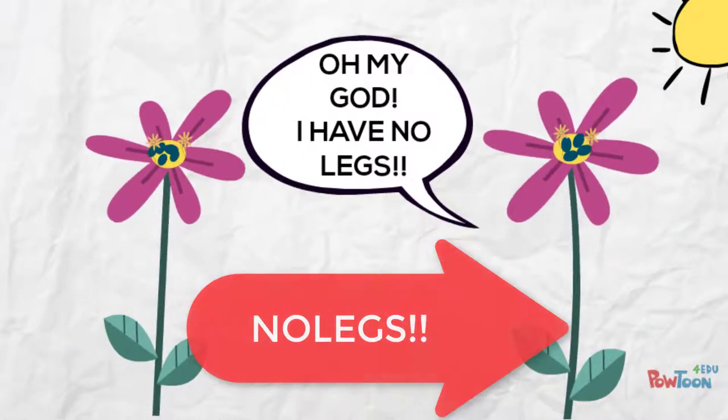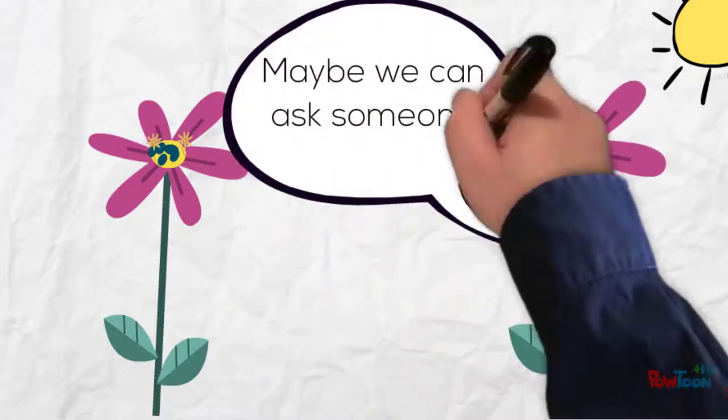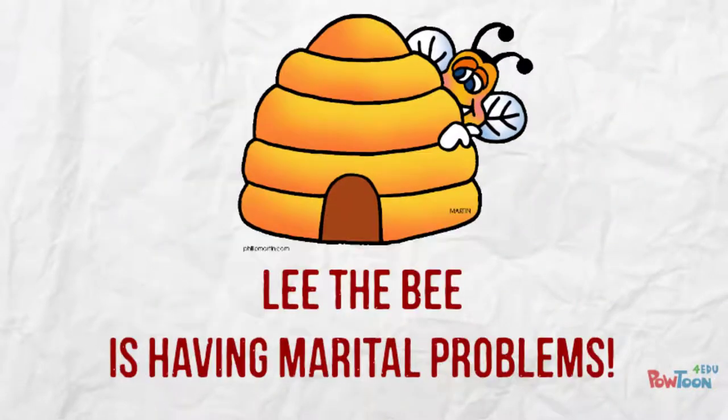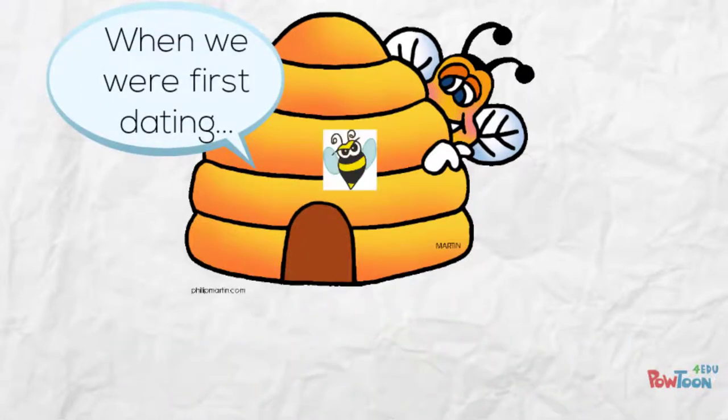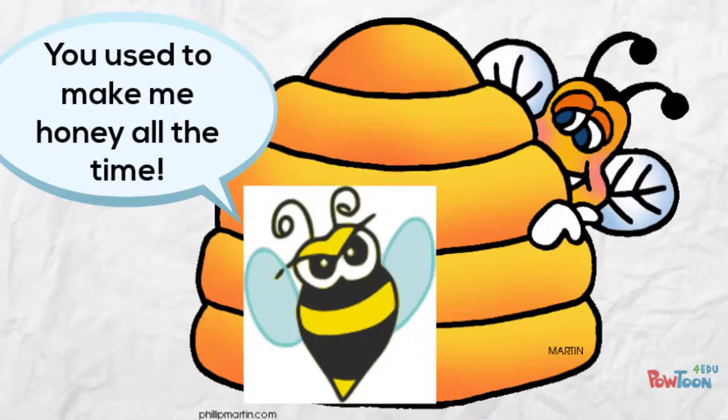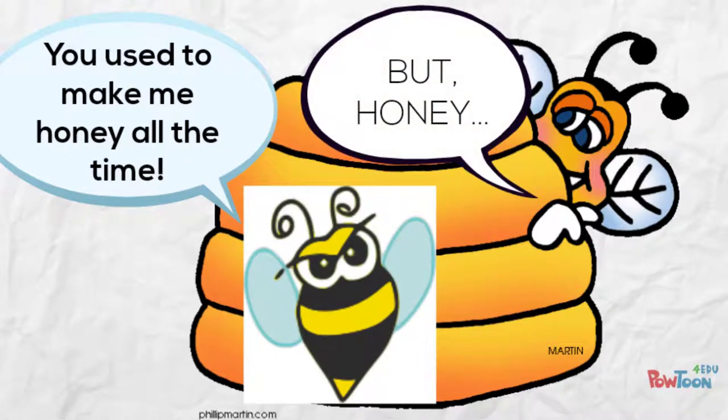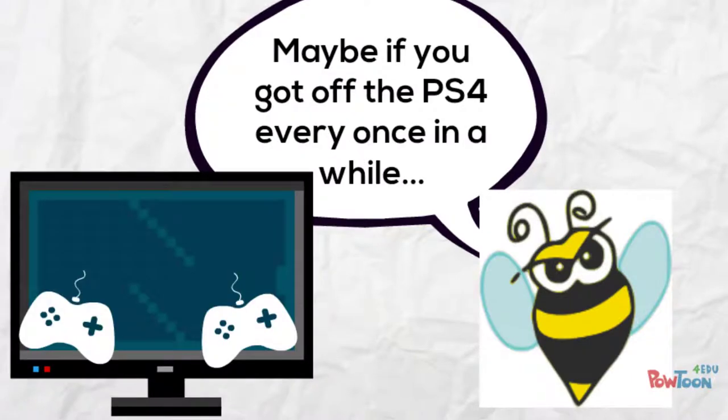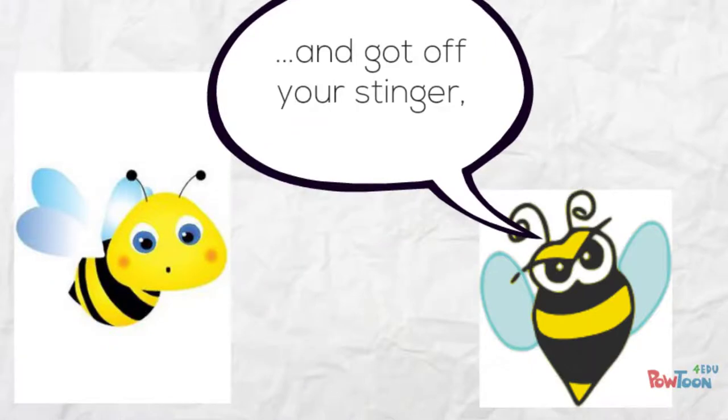Meanwhile, Lee the bee is having marital problems. When we were first dating you used to make me honey all the time. But honey, don't you... But honey me! Maybe if you got off the PS4 every once in a while and got off your stinger, you could go get some pollen and make me some honey.